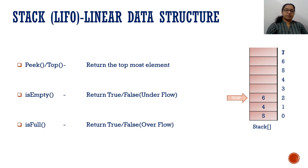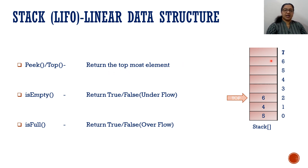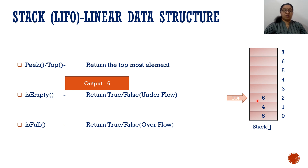Now let us check the peek or top function. This function is used to return the topmost element of the array — just to return that value. See the example: the array named 'stack' has elements 5, 4, 6. Top is focusing on the topmost element, which is 6. When you call the peek function, we will get the value at top — the output is 6. We are not popping that element; the value stays in the array. We just get that value in a variable or on the monitor — just to know which element is on top.